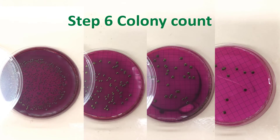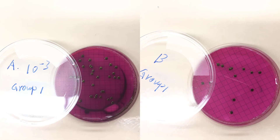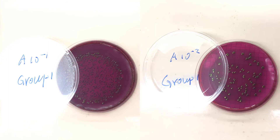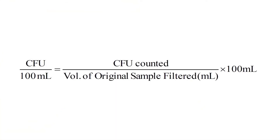Come back the next day and take out the plates from the incubator. Count the number of colonies in each plate and record the counts in your expanded version of Table 1. If there are too many colonies to count, write down "too many to count" in your logbook. To determine the indicator bacteria concentration in colony forming units per 100 ml, use the equation provided and record the value in your table.